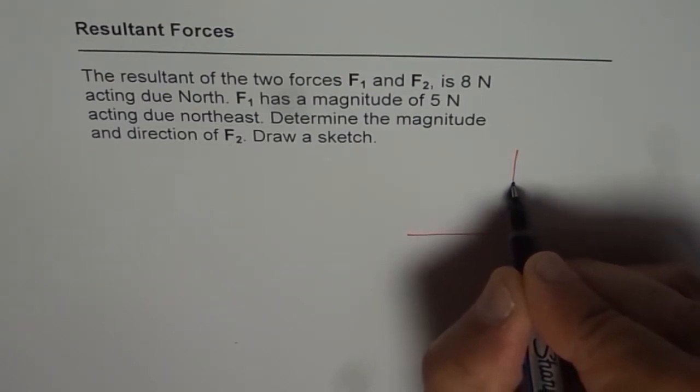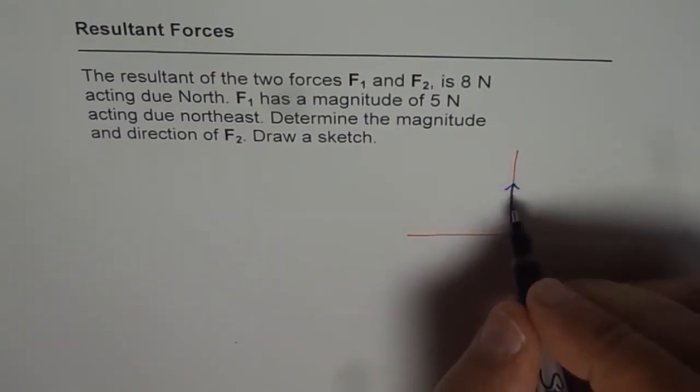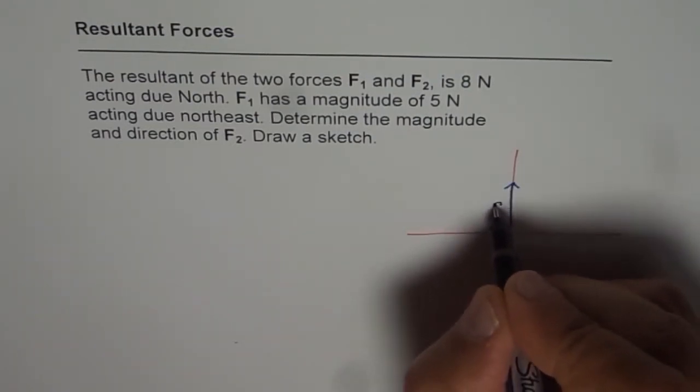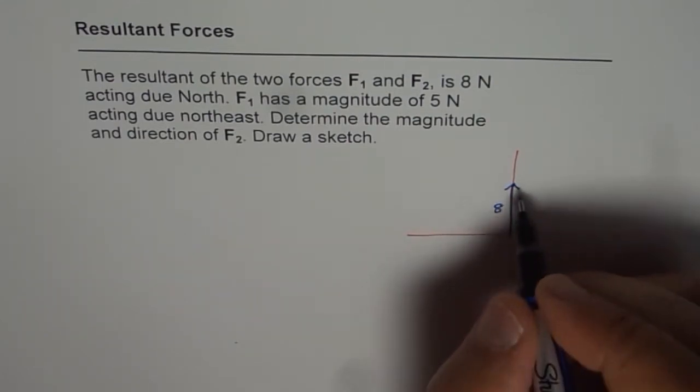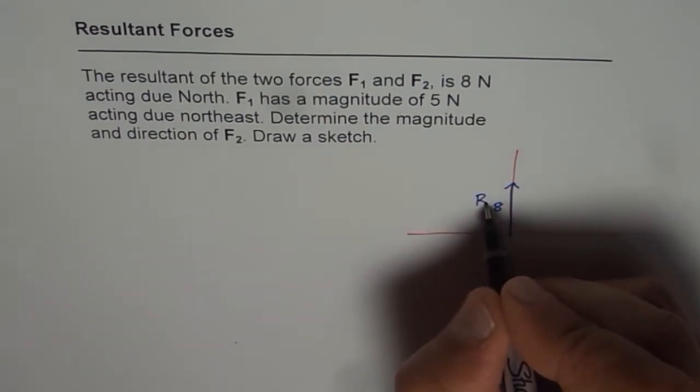And let's say this is our resultant. And let this magnitude be 8 newtons. We'll call this as resultant, R.